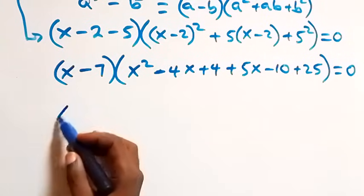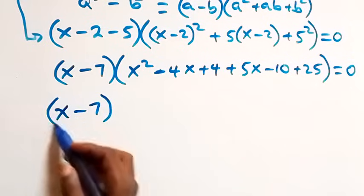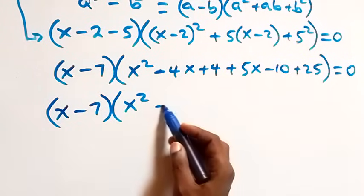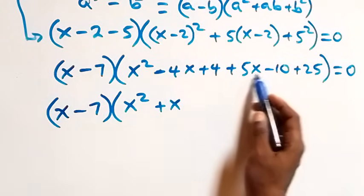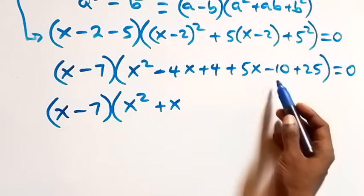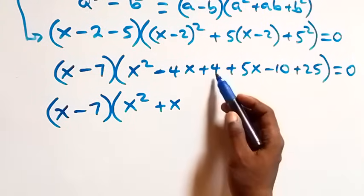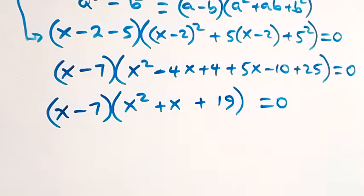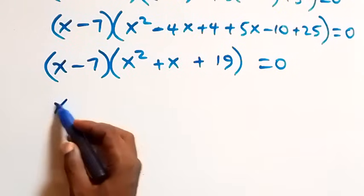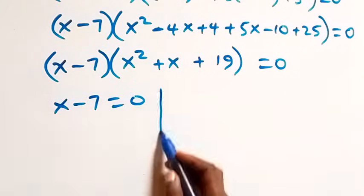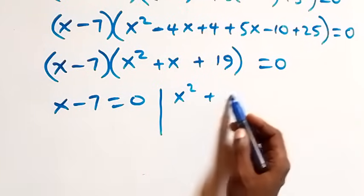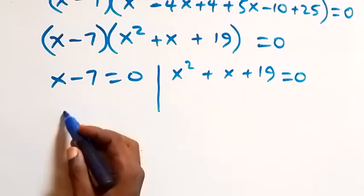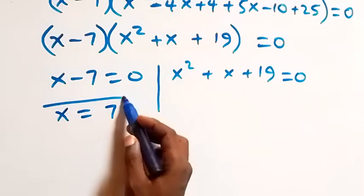Simplifying inside the bracket: x squared, minus 4x plus 5x gives plus x, and 4 minus 10 plus 25 gives 19. So we have x minus 7, times x squared plus x plus 19, equals to 0. Two cases: x minus 7 equals 0 gives x equals 7, also a real solution.